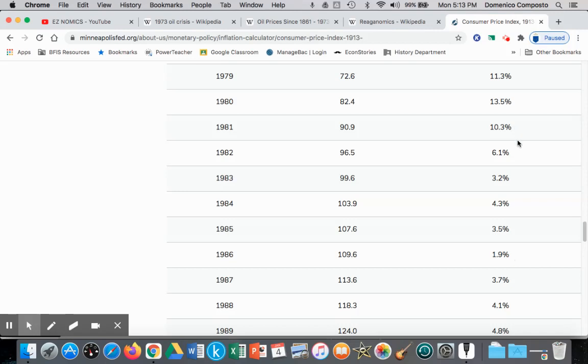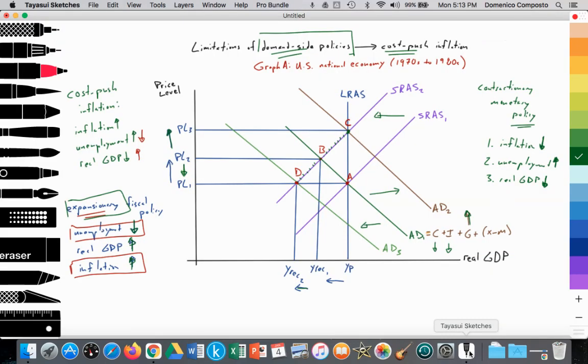So how was this achieved? How was the Reagan administration, and Margaret Thatcher in the UK who used similar policies, how were they able to tackle cost-push inflation? So that's what we're going to look at.